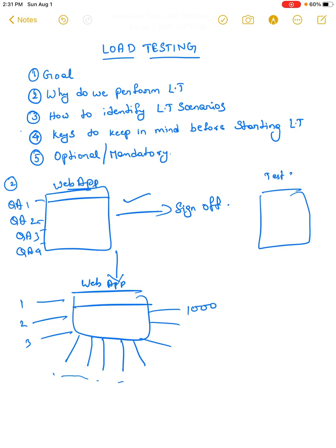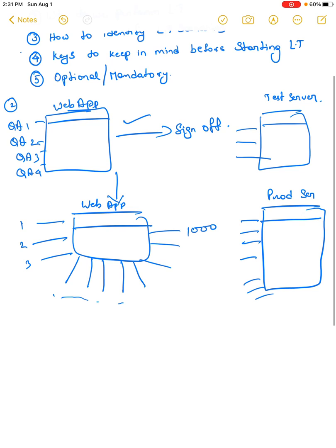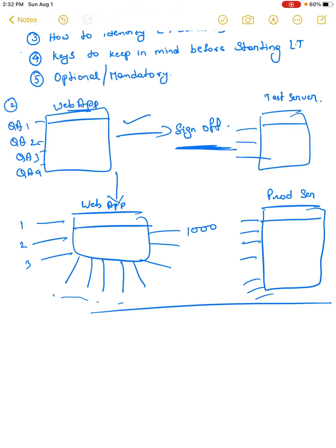In production, the real-time users using this application might be around a thousand users. Now the test server you tested on — the way it is responding to four QAs — might not be the same as how the production server responds to a thousand users. We may have to ensure that the test and prod environments are in sync, with no infrastructure differences. Let's assume the infrastructure is exactly the same.